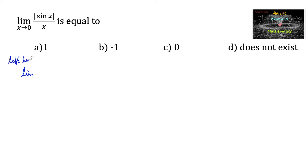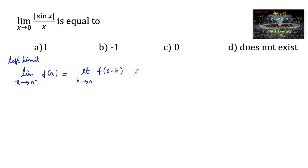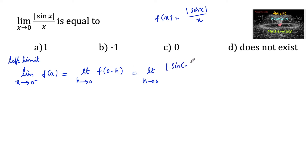Consider the left limit: limit x tends to 0 minus of f of x. We can write it as limit h tends to 0 of f of 0 minus h. Our function f of x is mod of sin x upon x, so f of 0 minus h, that is, f of negative h, is mod of sin of minus h upon minus h.